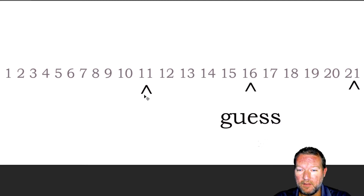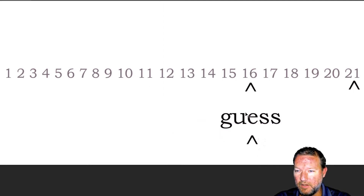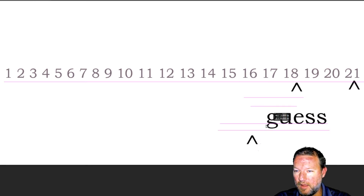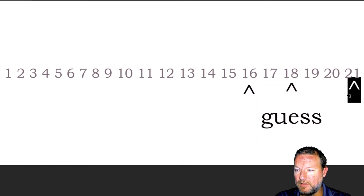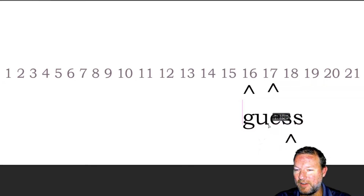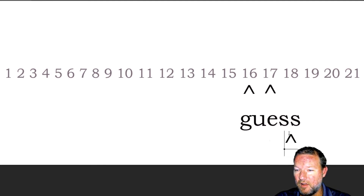We picked 16 — still too low. So we come here, go halfway again and get 18. That was too high, and this is how we ended up with our solution of 17.